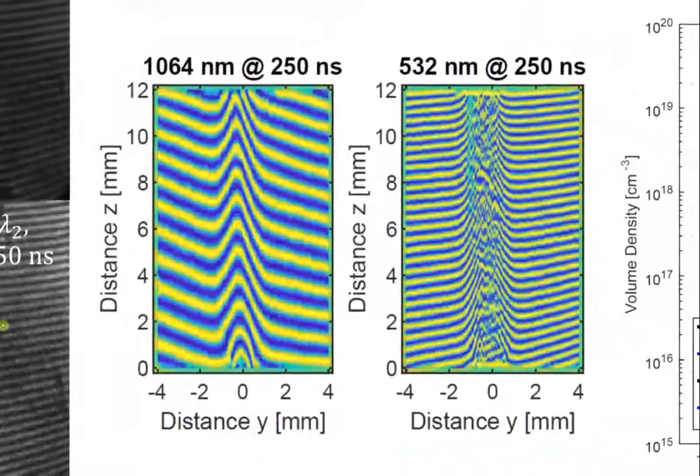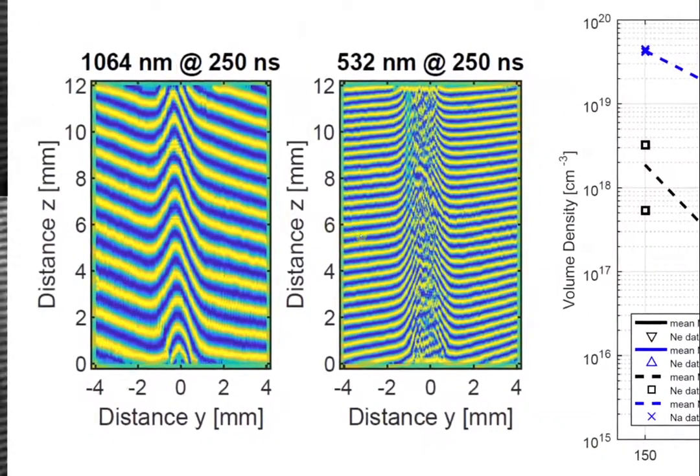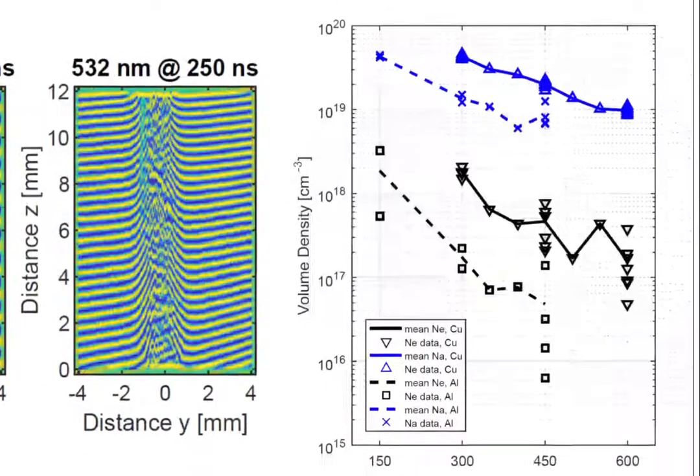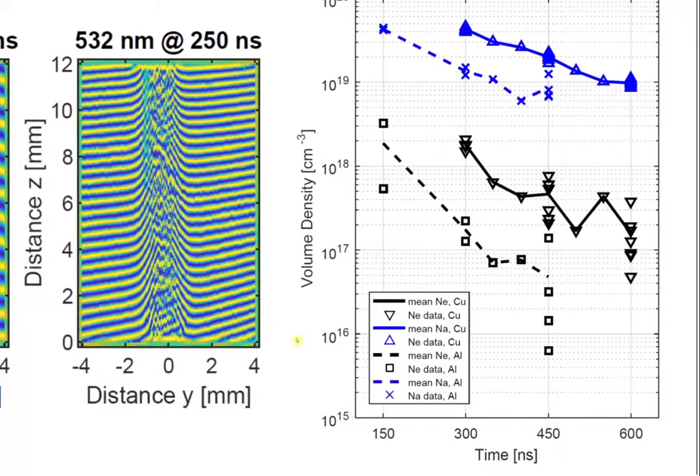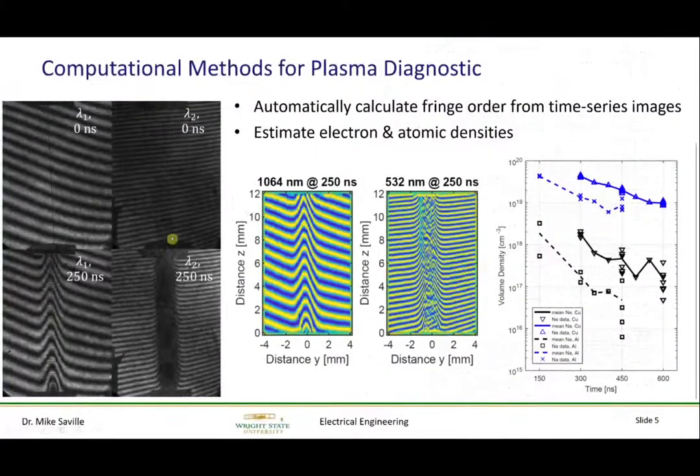Now, that's not a simple process, and we have to do quite a bit of signal processing in order to clean up the raw imagery shown here in the middle. Once we have that, we can then begin to estimate the fringe order. But you see, we have many different time samples. We have observed from 50 nanoseconds to 2400 nanoseconds, and so there's a lot of imagery that has to be processed. We've been developing automated methods to do that. But once it's done, then we can begin to characterize and observe the copper, or the aluminum in this case, electron and atomic densities versus time. So now the diagnostics can be gleaned from these raw interferograms in a very efficient manner.